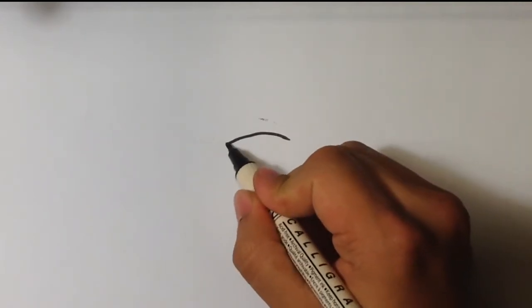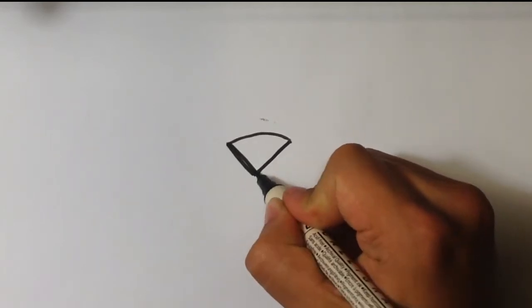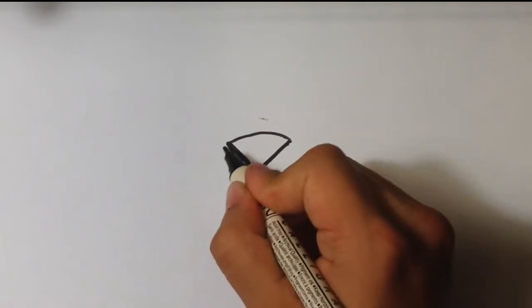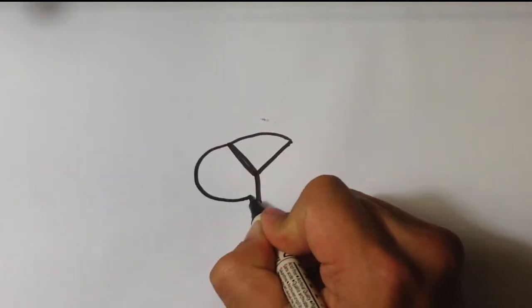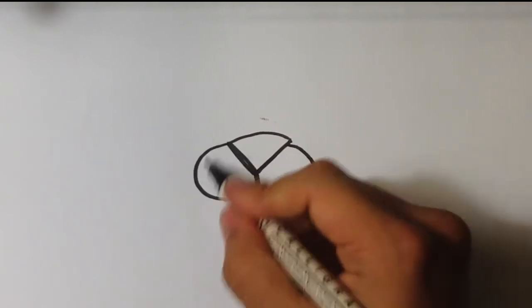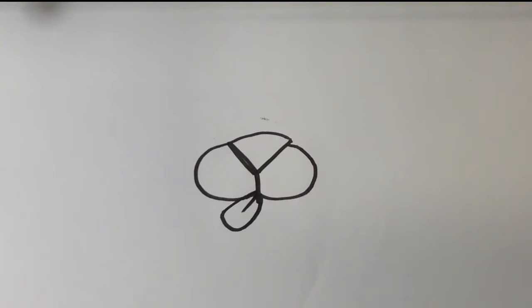It's very similar to the bear that we drew. Start with a triangle. Part in the mouth there. One side of the mouth. Other side. Make it kind of bunch up like that. I'm going to put the tongue sticking out.